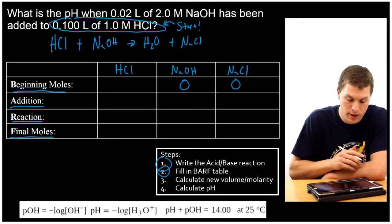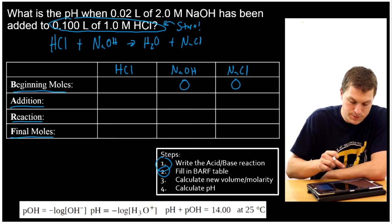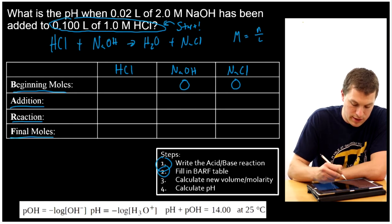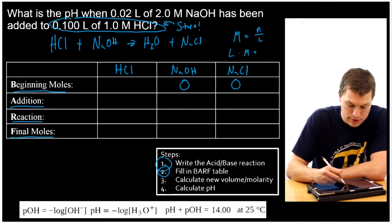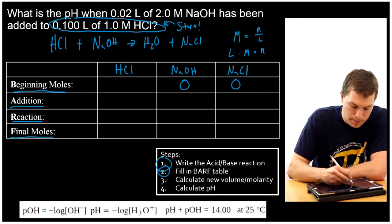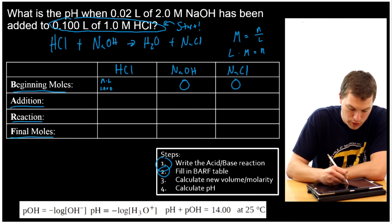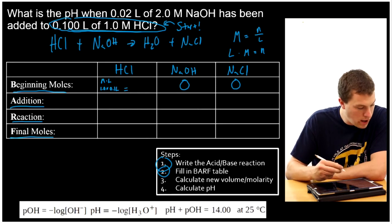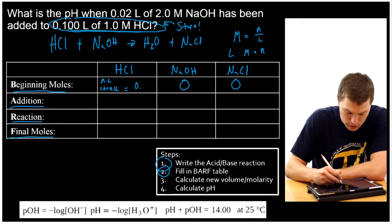The only thing we have is HCl, and I need my beginning moles. It's important to remember that molarity equals moles divided by liters, so liters times molarity equals moles. To get moles of HCl, I have to do molarity times volume, which is 1.0 molarity times 0.1 liters, which comes from my starting HCl. That gives me 0.1 moles.